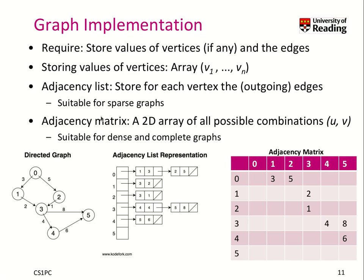For storing the edges, we have two popular choices. One is the so-called adjacency list, which means we store for each vertex the outgoing edges. So here on vertex 0, we have two outgoing edges — to 1 and to 2. We store this information in the list. We can also store the weight directly: from 0 we go to 1 with weight 3, and from 0 we go to 2 with weight 5. That's good if you have a very sparse graph.